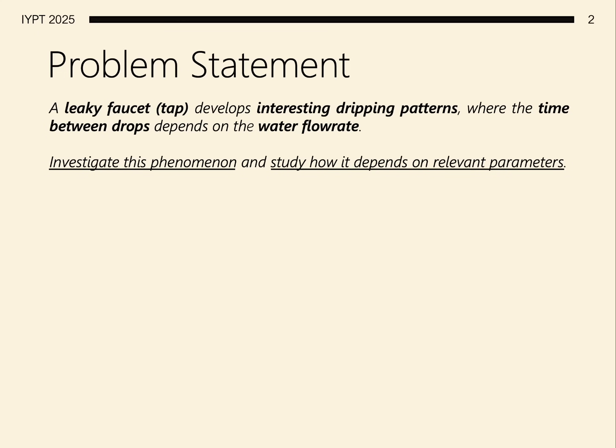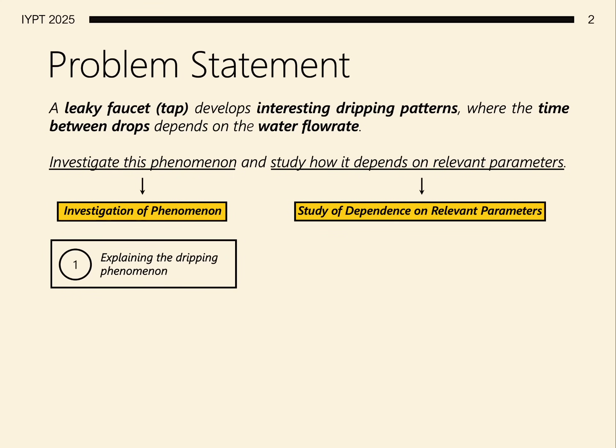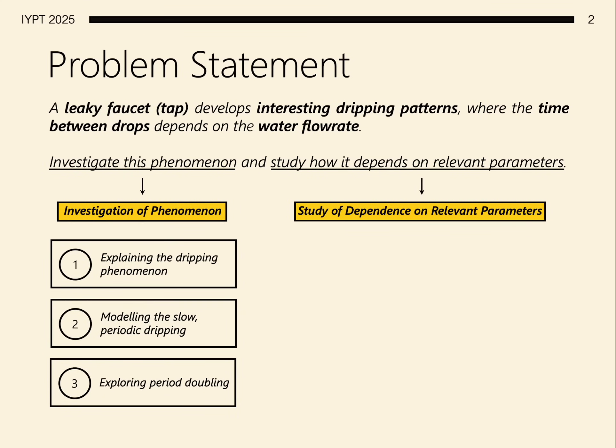We can therefore split the problem into an investigation of the phenomenon and a study of the dependence on relevant parameters. The investigation will consist of explaining the dripping phenomenon, modeling the slow periodic dripping, and exploring period doubling, although more should be explored for the International Round.